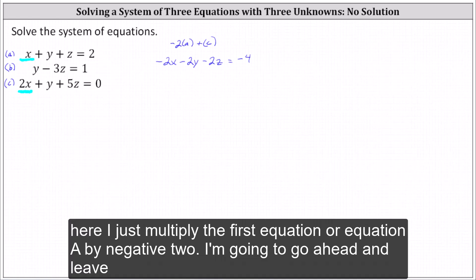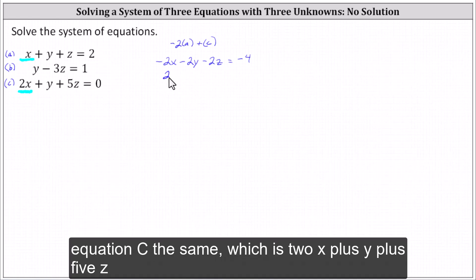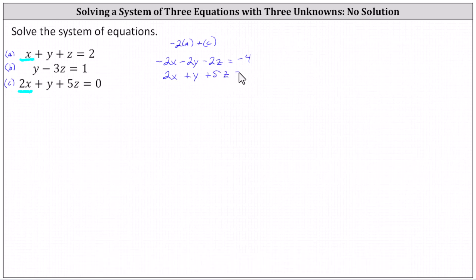Again, here I just multiplied the first equation or equation A by negative two. And we're going to go ahead and leave equation C the same, which is 2x + y + 5z = 0.